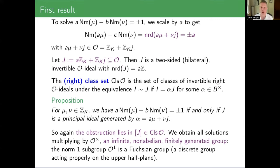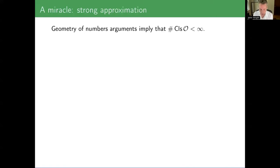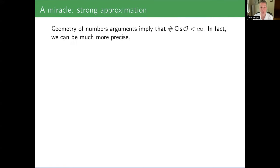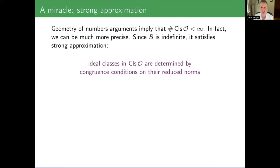So how hard is it to identify this element of the class set? In general, geometry of numbers arguments tell you that this class set is at least a finite set. But I can be much more precise because this is an indefinite quaternion algebra — it satisfies strong approximation. Here's the slogan I hope you'll remember: ideal classes in this class set, in the indefinite case, are completely determined by congruence conditions on their reduced norms. So as complicated as you may have thought it might be to check if the right ideal 𝒥 is principal — in fact, all that matters is its norm. That's the power of strong approximation.